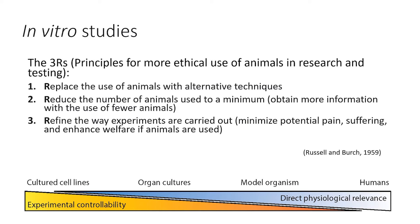In addition to following the principle of the Three Rs, in vitro studies like experiments with cultured cell lines have several advantages over animal experiments. One main advantage is experimental control ability — it is much easier to control the conditions in cultured cells than it is in animals.